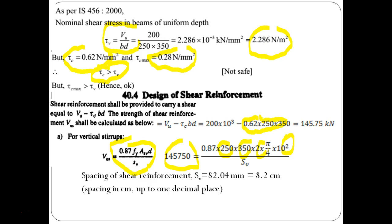So, student has to calculate first of all tau V and then accordingly check this tau C and tau C max for the parameters available. Once you get it, now he has to calculate shear reinforcement with the particular shear strength or the strength of the shear reinforcement VUS that is equal to VU minus tau C BD. Once you get it, you can calculate with this particular formula VUS is equal to 0.87 Fy ASV D divided by SV. So, spacing he will get with this particular formula. But, student has to note that he has to calculate in terms of centimeter that is up to only one decimal place.